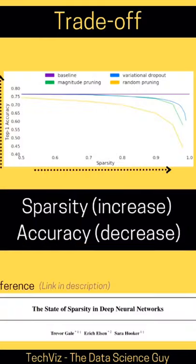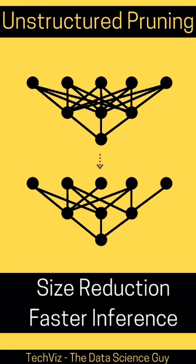As we can see in this figure of accuracy vs sparsity for different pruning methods applied on ResNet, as the sparsity increases, accuracy decreases. Unstructured pruning is about setting low magnitude weights in a network to zero, which is equivalent to switching off some of the connections and hence ignoring their effect. You could do this for just one pass or recursively depending on the tolerance in the trade-off curve.